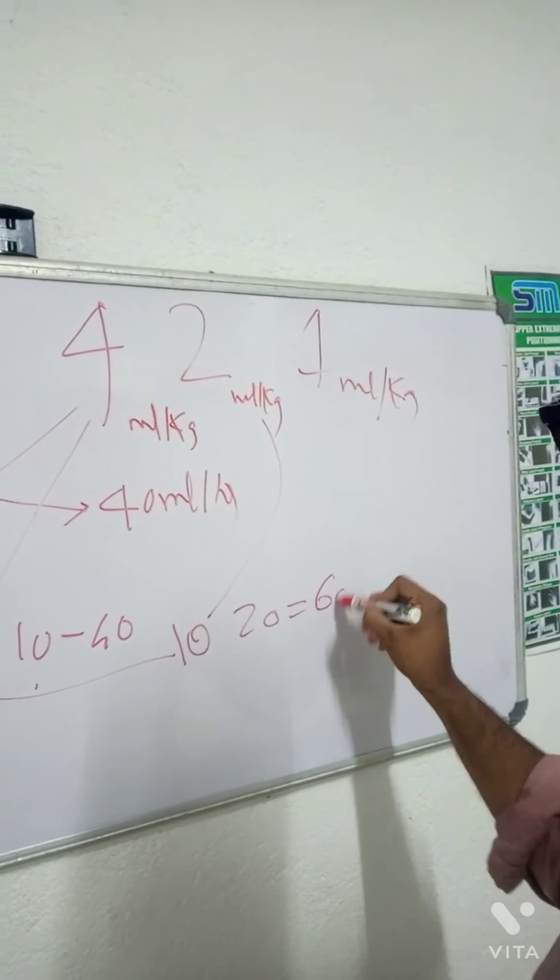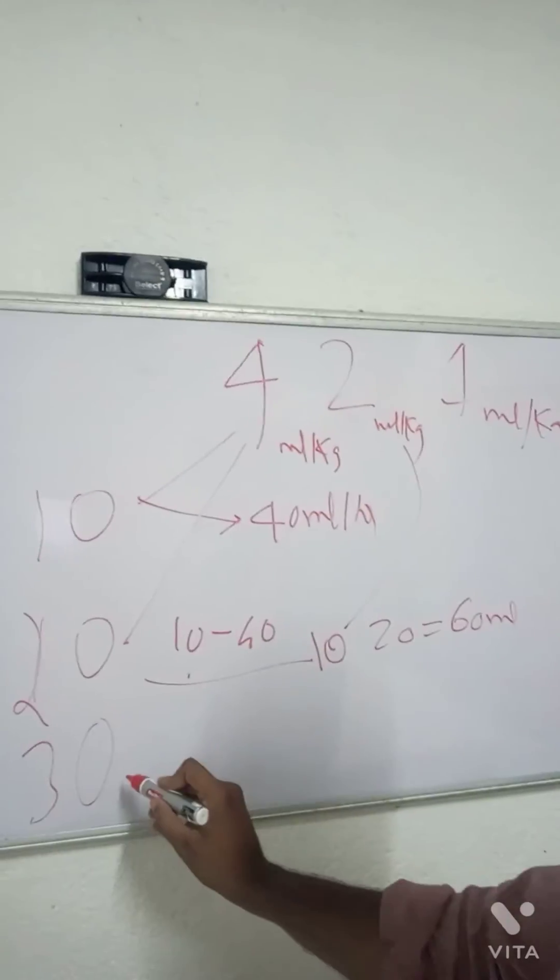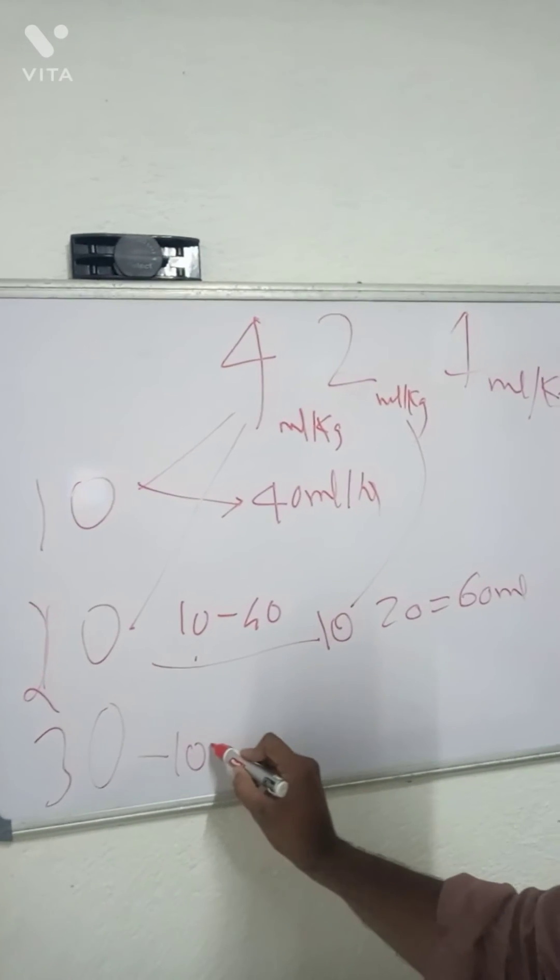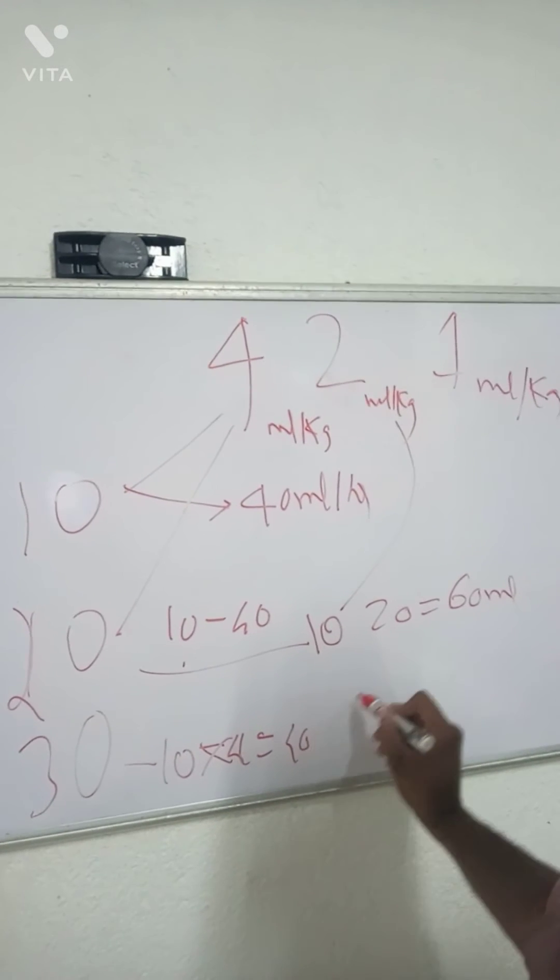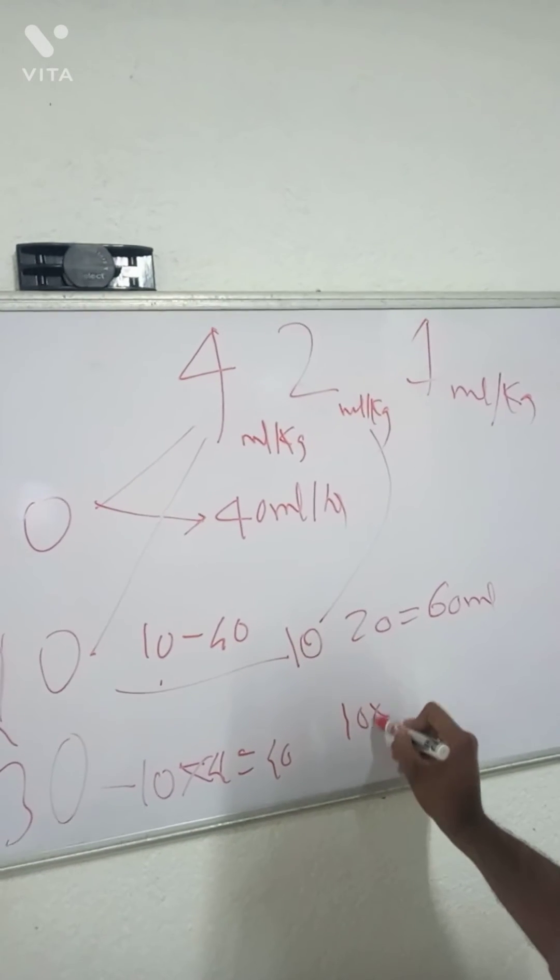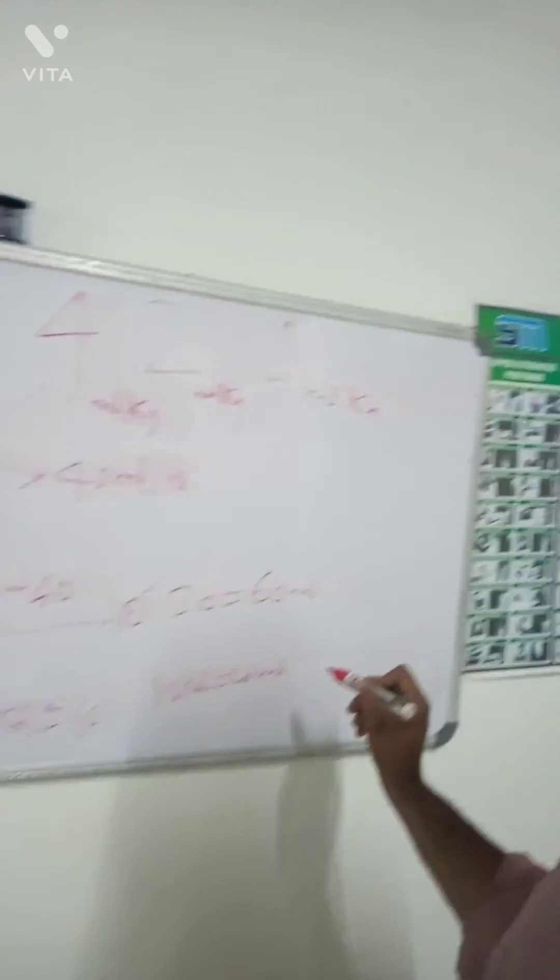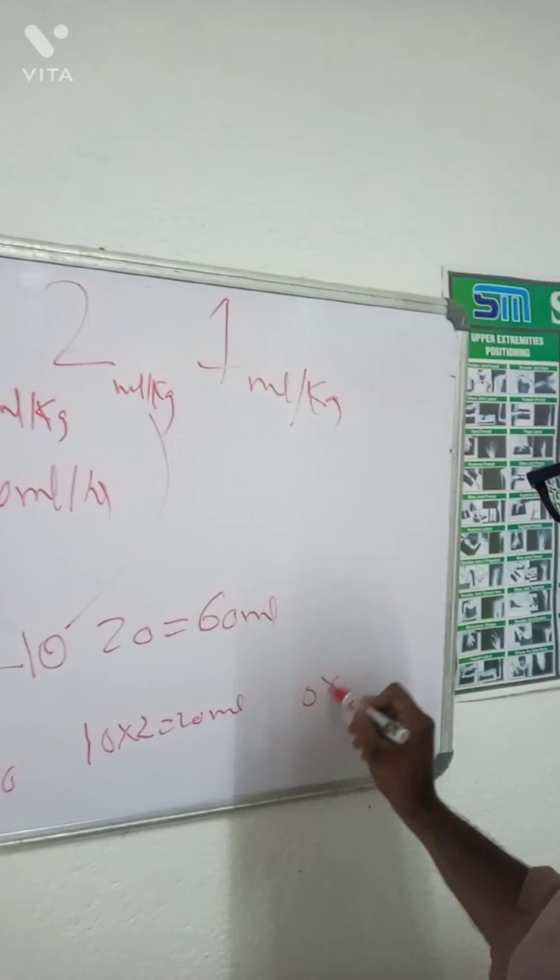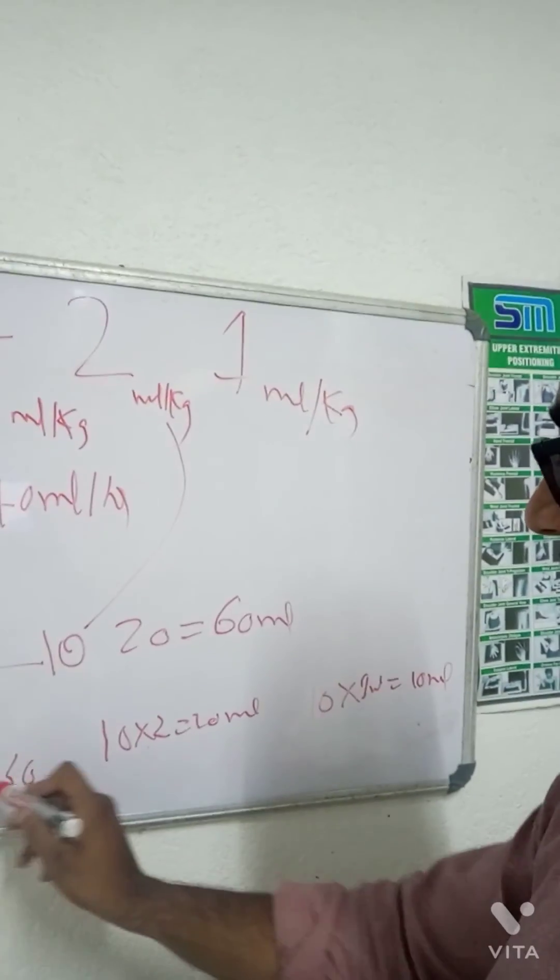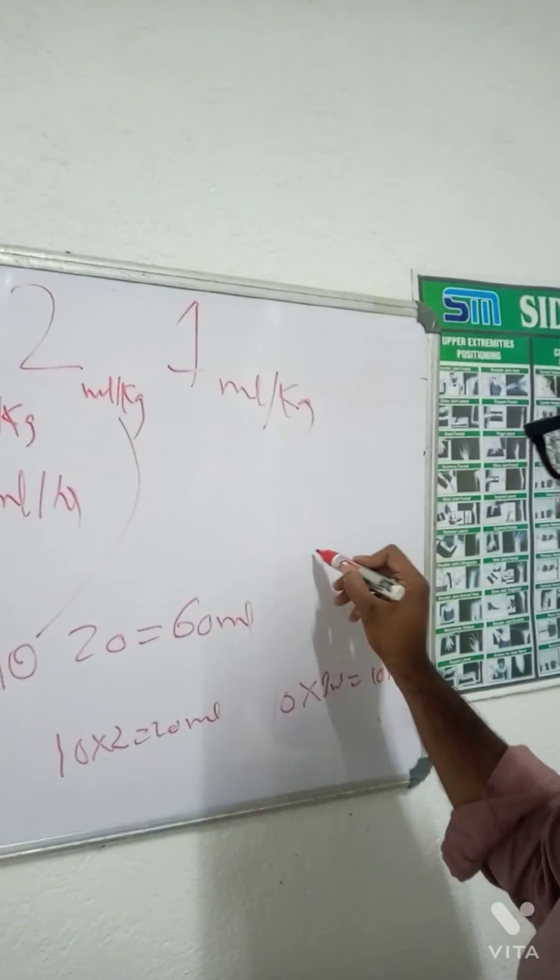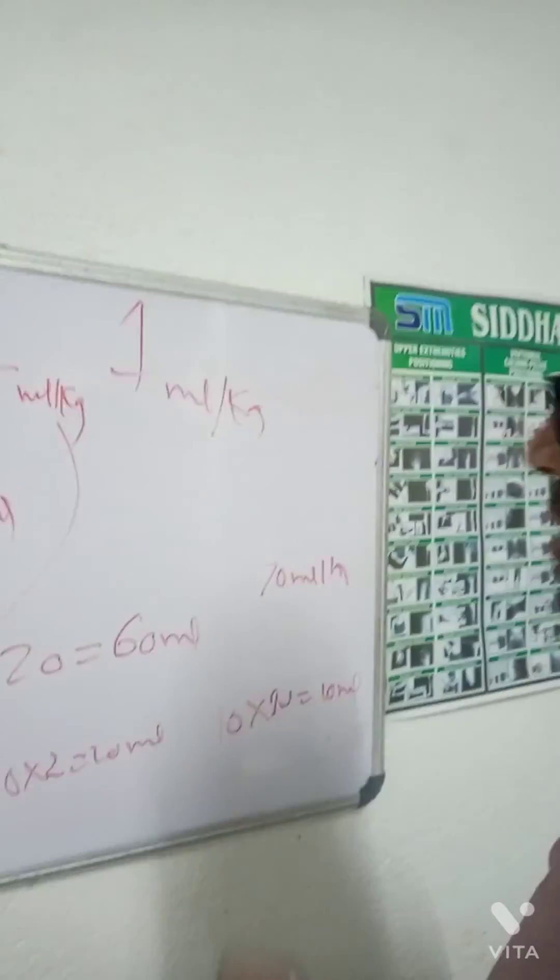So 60 ml per hour. And this 30 kg, first 10, 4 means 40, next 10 kg into 2 is 20 ml and next 10 kg into 1 ml is equal to 10 ml. So 40 plus 20 plus 10 ml. So 70 ml per hour of fluid.